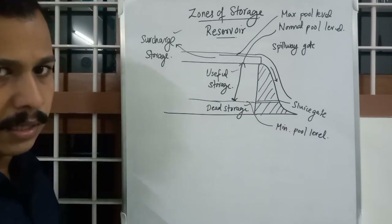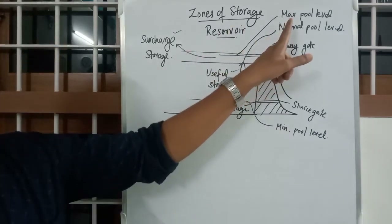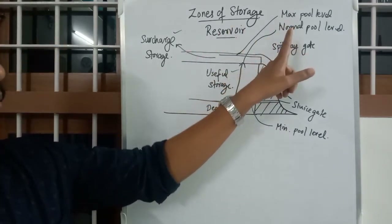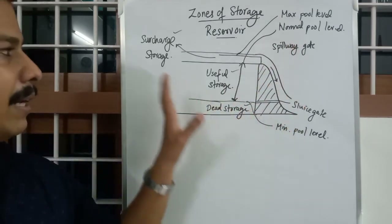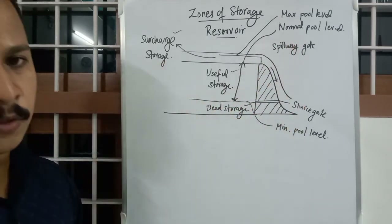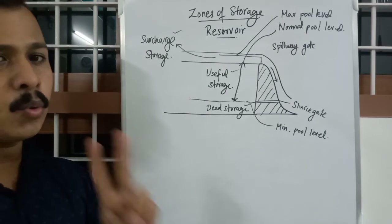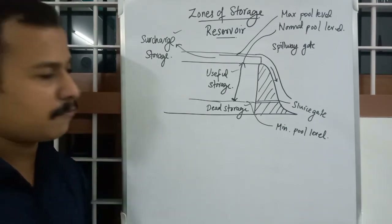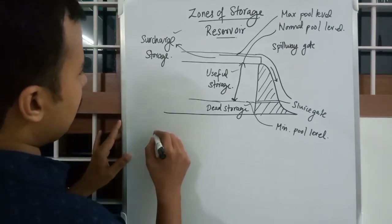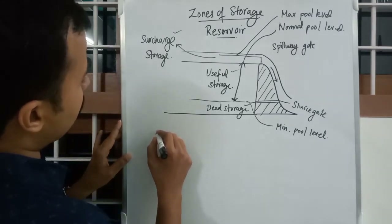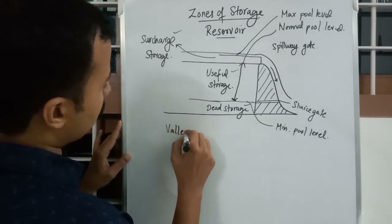So we have addressed Useful Storage, Surcharge Storage, and Dead Storage — along with Maximum Pool Level, Normal Pool Level, and Minimum Pool Level. Those are three types of storage. There are two more, making five in total. The fourth one is Valley Storage.